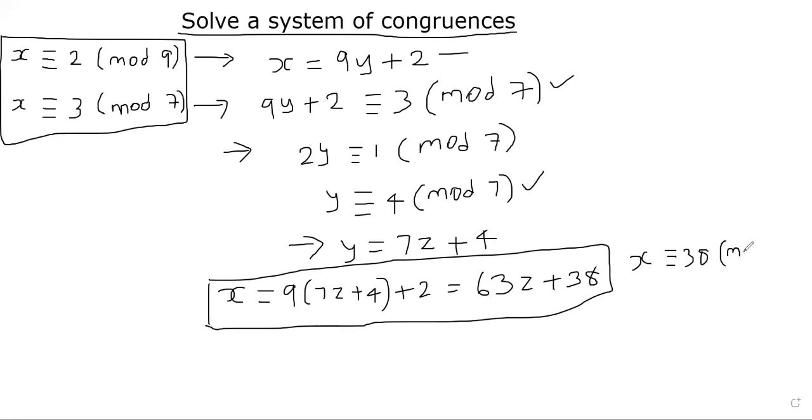So you can check for yourself. Let me finish this first. Take the x to be 38 and substitute here. 38 is clearly 2 mod 9 because 38, when you divide it by 9, you get 2 as a remainder. And 38 is 3 mod 7 as well. You can keep adding 63 to it. If you add 63 to it, it won't change the answer because 9 and 7 both divide 63.